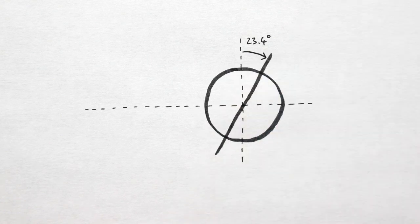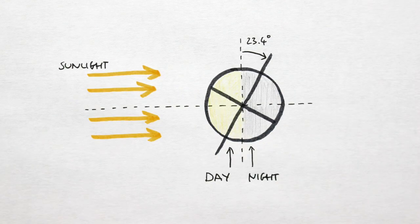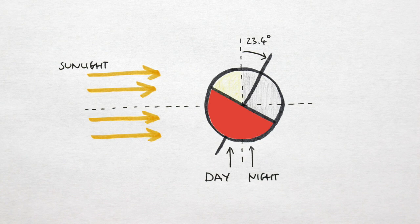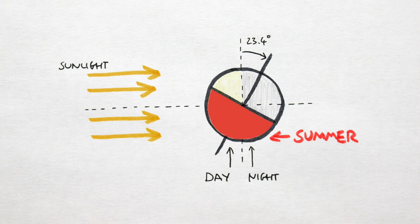This tilt for half the year angles one hemisphere towards the sun, and the other away from the sun. The hemisphere angled towards the sun will receive more direct sunlight, making it summer there. Temperatures are warmer, days are longer, and nights shorter.